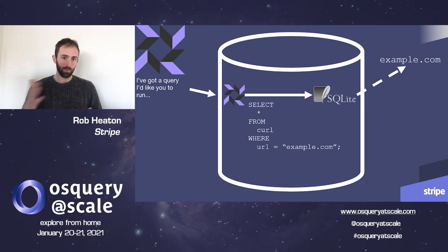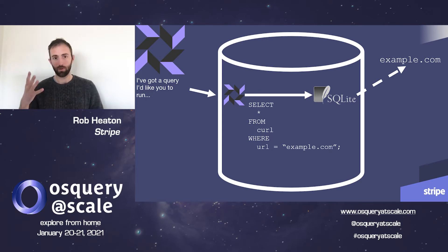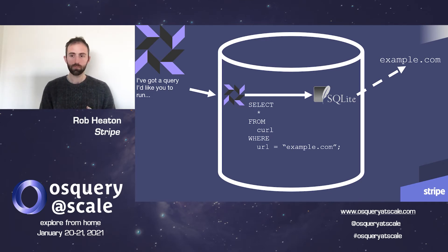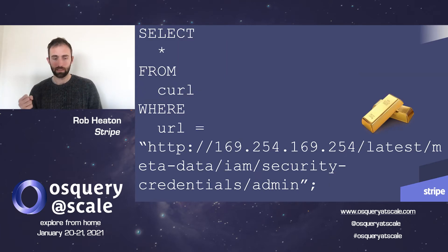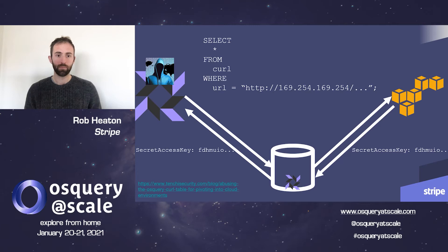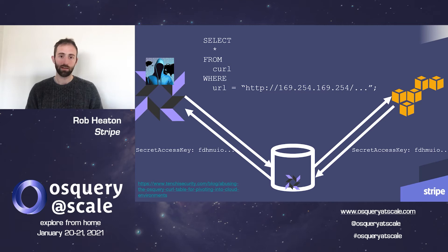For example, they could use the curl table to send HTTP requests to any internal service that the target server has access to. If we think about an AWS environment, one particularly interesting service for an attacker to target is the AWS metadata service. This is an internal AWS managed service, and one of its jobs is to dish out temporary credentials, which allows servers to assume different roles giving them different permissions. So an attacker could ask this metadata service for a set of temporary credentials, read them out of the response from their curl query, and some of these credentials will in fact work from the public internet — meaning the attacker can use them from the comfort of their own sofa to, for example, exfiltrate all of your data from S3.